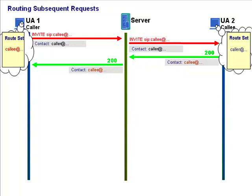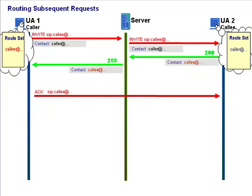The callee includes his own contact address in the final response before sending it upstream to the server, routing the response to the address in the Via header. The server proxies the response upstream and, on receiving it, the user agent client creates his own route set and stores in it the contact address of the callee — in case he needs to send any subsequent requests during this call. Of course he's going to send one right now: the ACK. The user agent client takes the address from his route set, copies it into the request URI of the ACK, and sends the ACK directly to the user agent server.